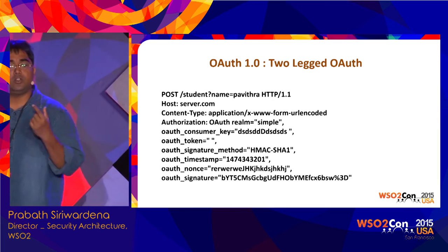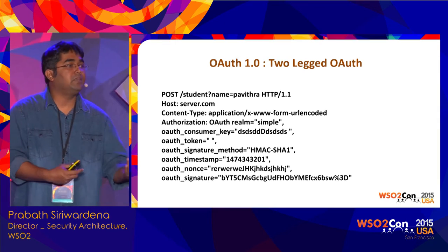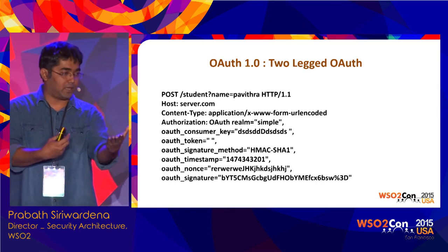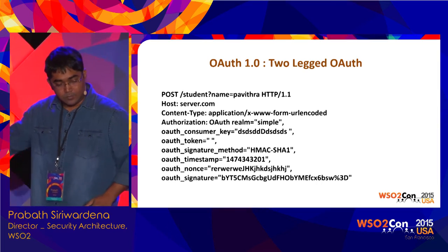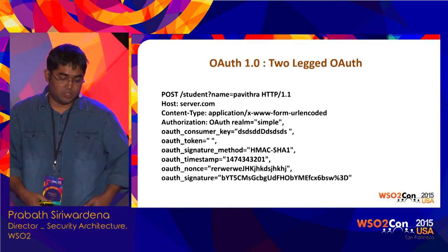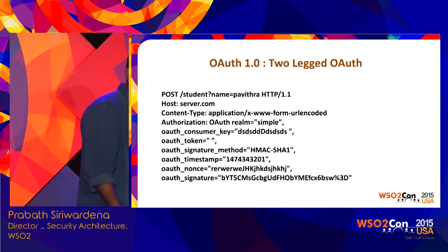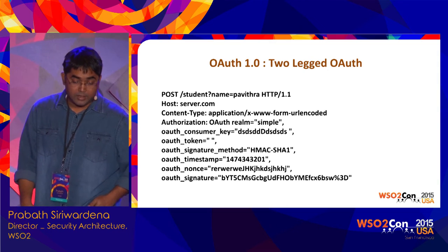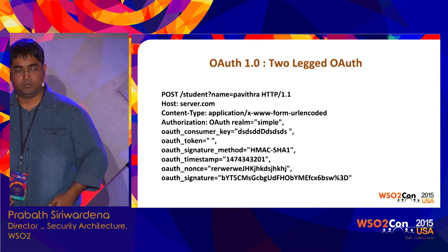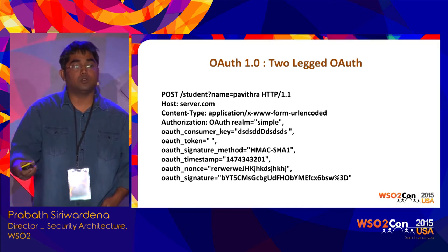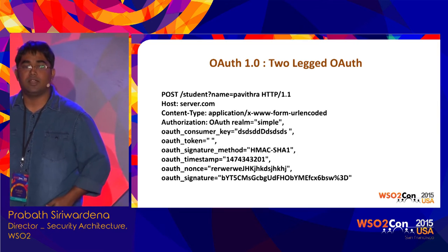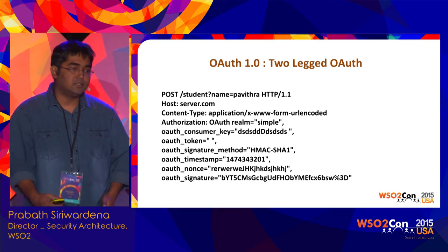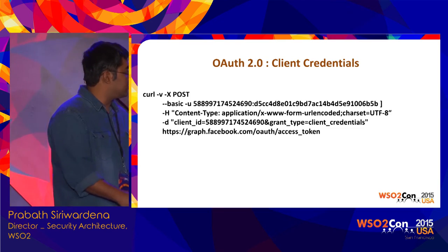With two-legged OAuth, we have only two entities — the client becomes the resource owner, so you are basically accessing your own API. You have a consumer key and consumer secret and use a signature-based mechanism — you never pass your client ID over the wire. In OAuth 2.0, the equivalent profile is the MAC token profile, but it's still under development and hasn't reached the mainstream yet.